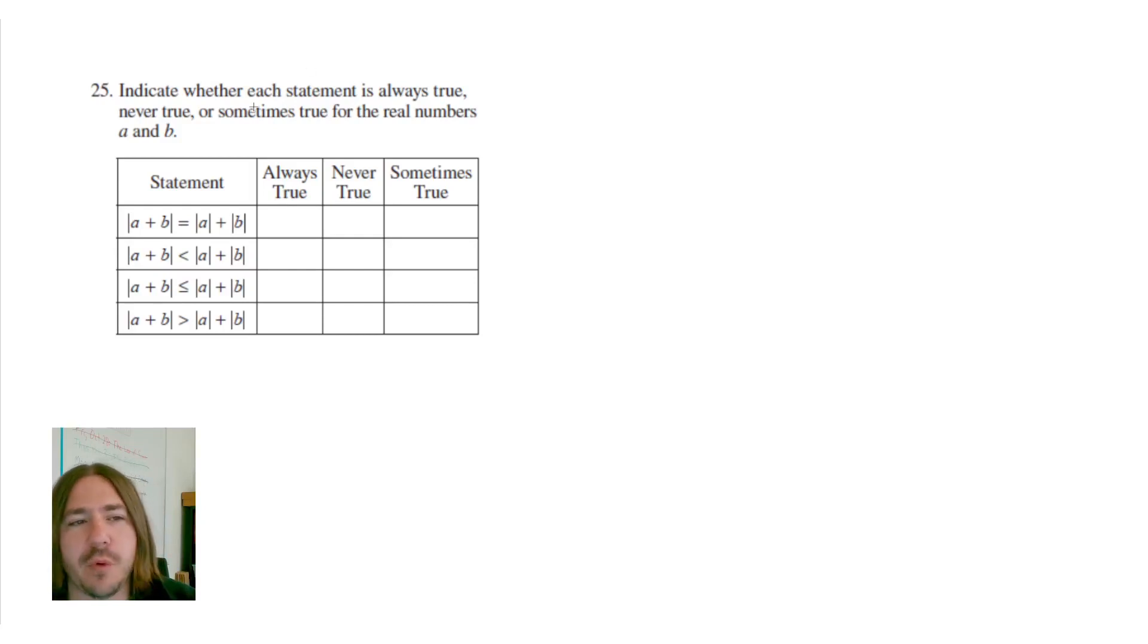Hey y'all, welcome back. Number 25 says indicate whether each statement is always true, never true, or sometimes true for the real numbers A and B.